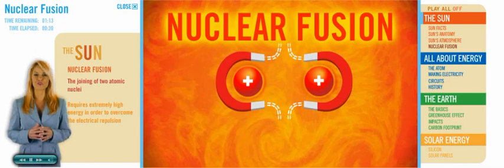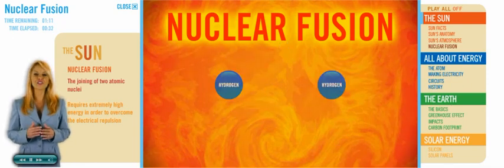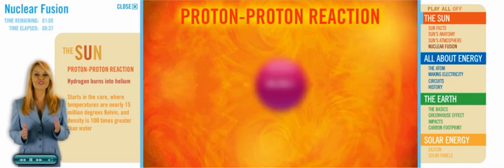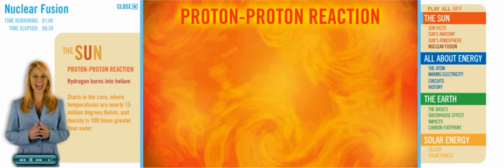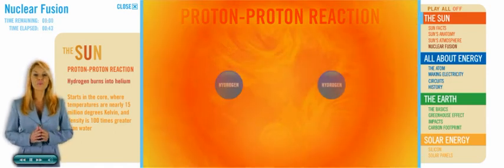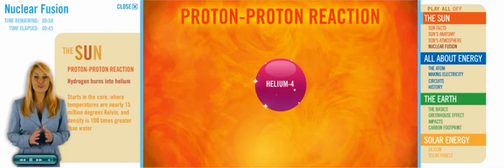Most of the energy created by the Sun is generated during a sequence of reactions, where hydrogen burns into helium. This is called the proton-proton reaction. It all starts in the core, where, remember, temperatures are somewhere in the neighborhood of 15 million degrees Kelvin.